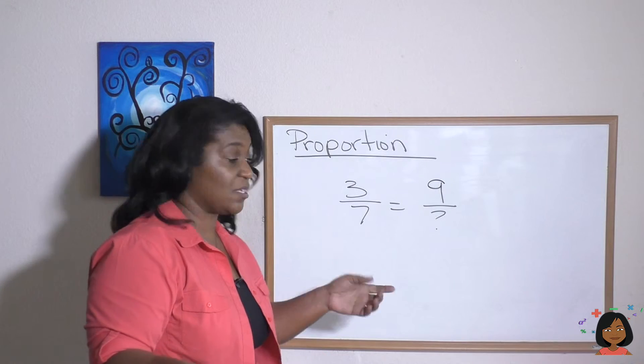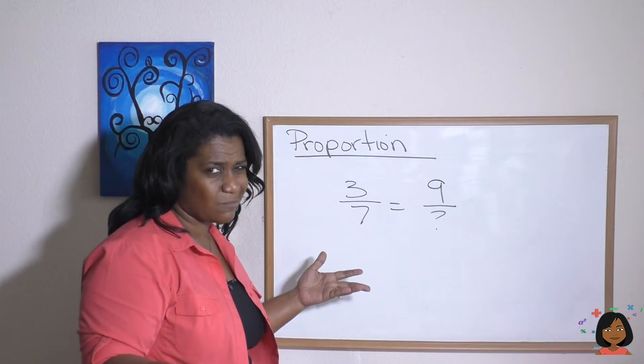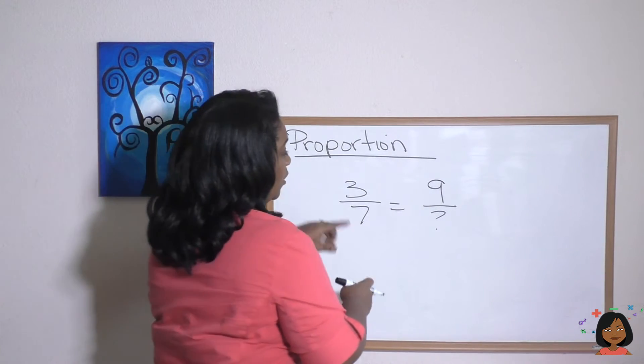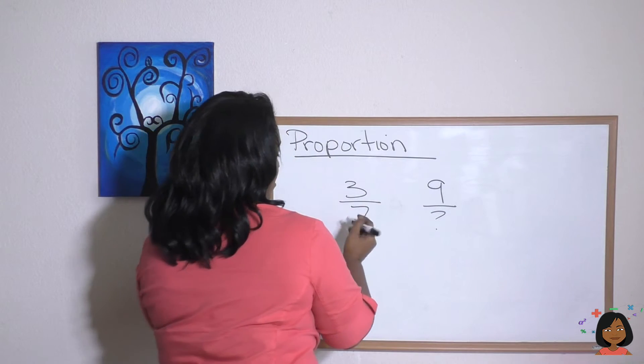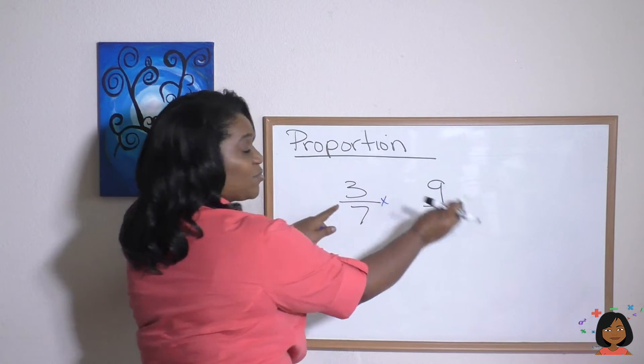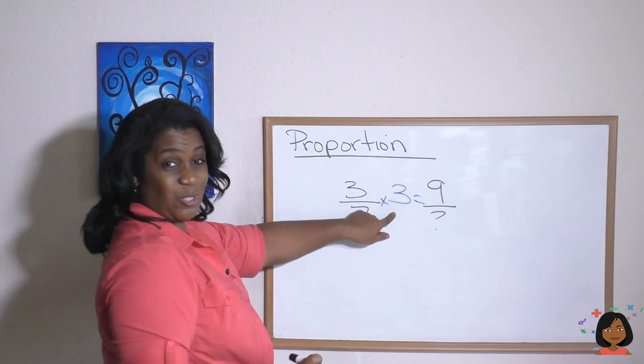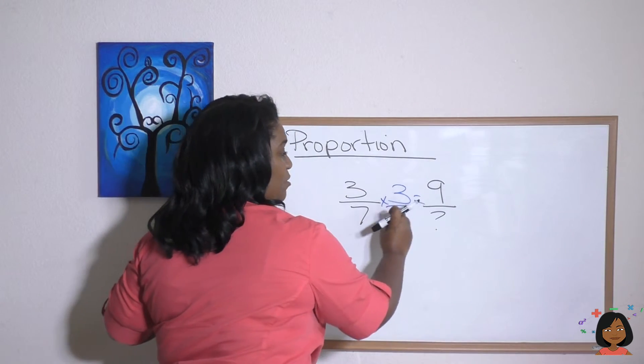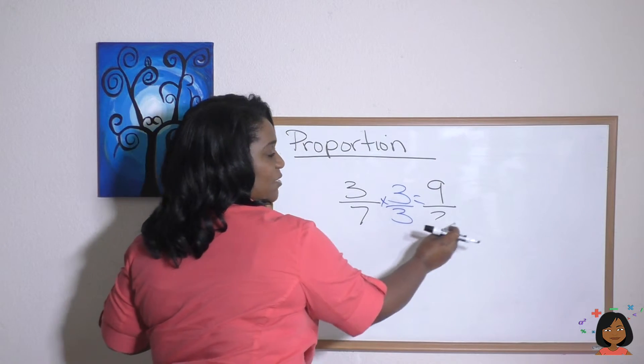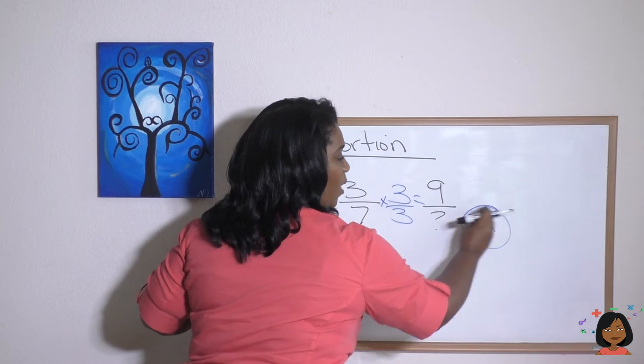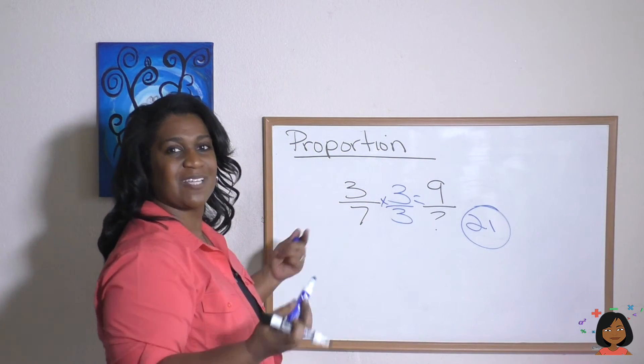Well, what if the number that's missing is the denominator? Does it still work? Of course it does. So look, I'm going to say 3 times what is 9? 3 times 3 is 9. What you do to the top, you got to do to the bottom. So 7 times 3 is going to give me 21. So my missing number is 21.